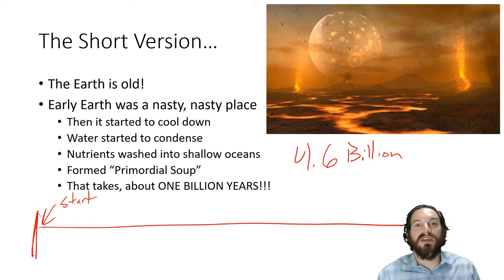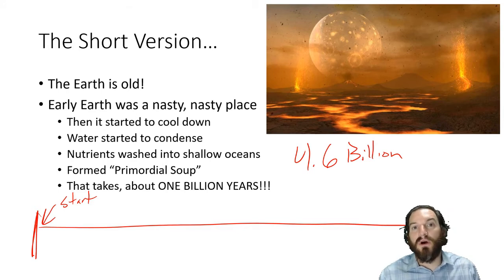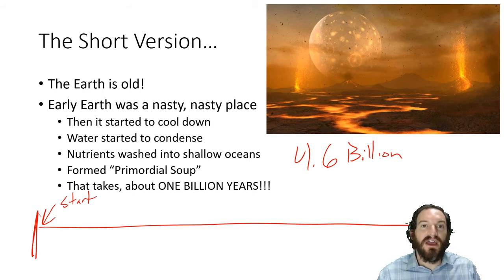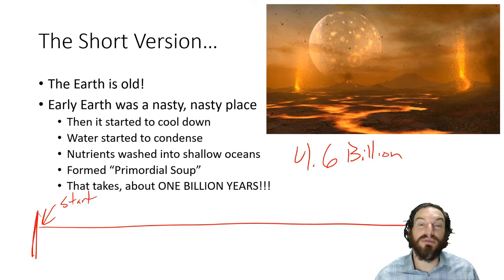Eventually it started to cool down, and it took approximately a billion years for this to happen. As the earth cooled, water started to condense out of the atmosphere, flow over the rocks, and eventually dissolve a lot of phosphates, nitrates, and various other salts into the water. It would then collect in very shallow seas, still very hot and bubbling — what we refer to as the primordial soup.